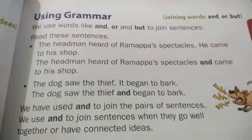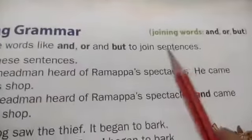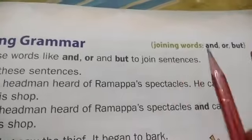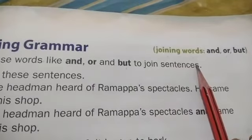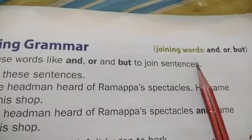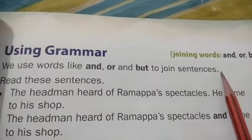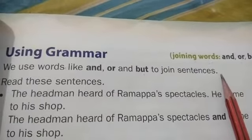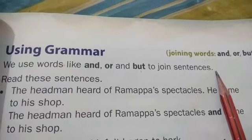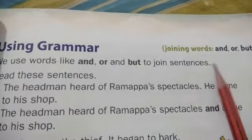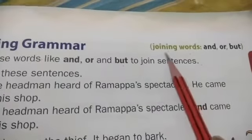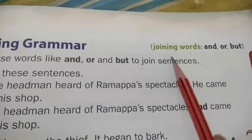Good morning children. This is a term book page number 47. Joining words. Children, already I sent about conjunctions video. I hope you all understood, children. Once again we will see. Okay, joining words.